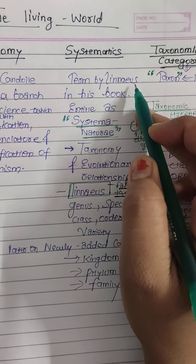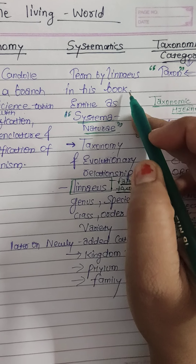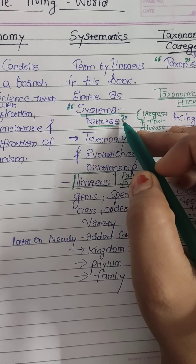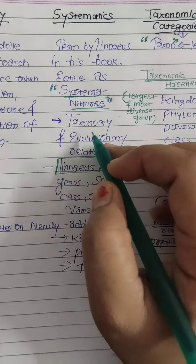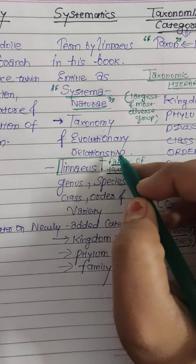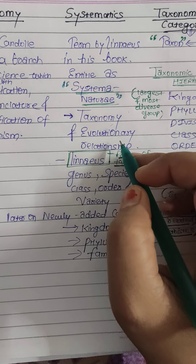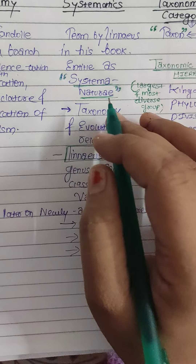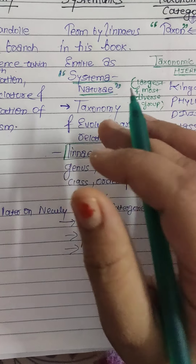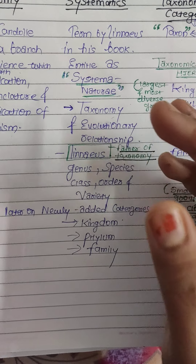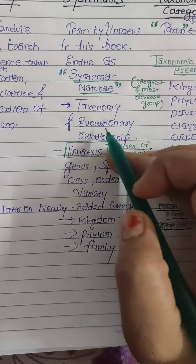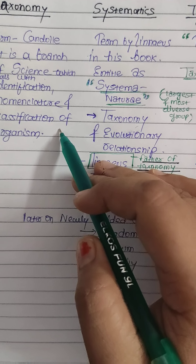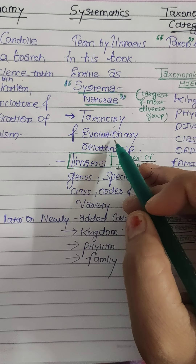The second term is systematics. The term systematics was given by Linnaeus in his book entitled 'Systema Naturae'. Systematics covers identification, nomenclature, and classification of organisms, and also includes the study of evolutionary relationships. 'Systema Naturae' means that we have identified, named, and classified organisms.